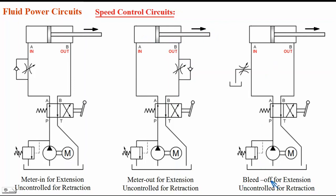In the third circuit — the bleed-off circuit — in the first position of the valve, P to A and B to T connection is there. Oil from the pump flows from P to A, and a controlled amount of oil flow is bypassed back to tank through the flow control valve; only the remaining oil flows into the cylinder, so extension speed is controlled. When the lever is in the second position, P to B and A to T is made. Oil flows to port B, the piston retracts, and oil on the other side flows back to tank — retraction speed is not controlled because the flow is free flow with no flow control valve in that line.